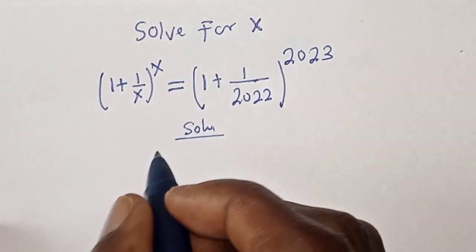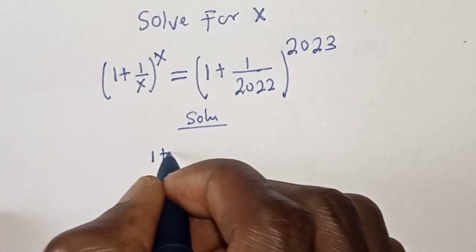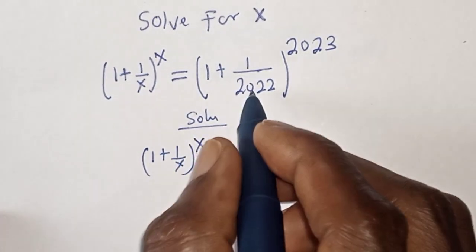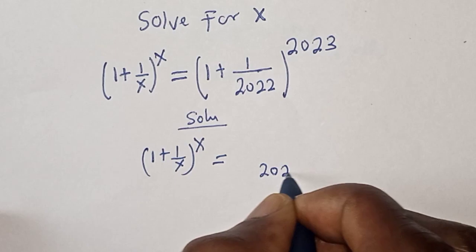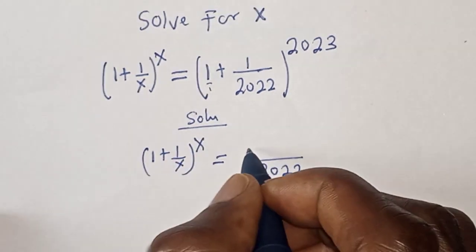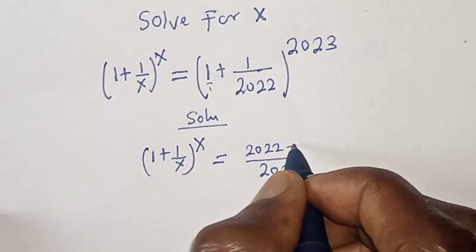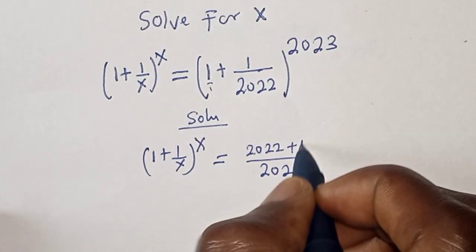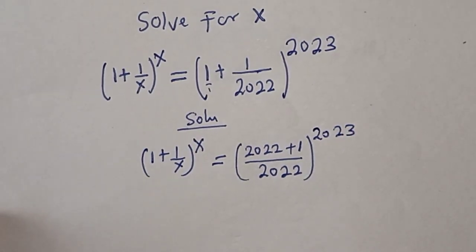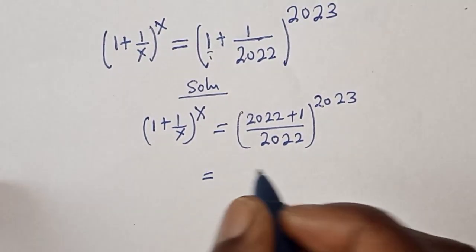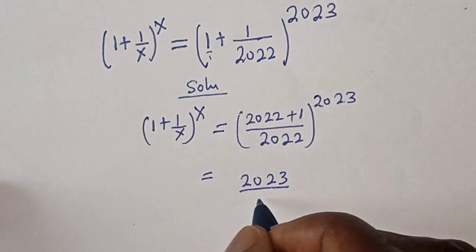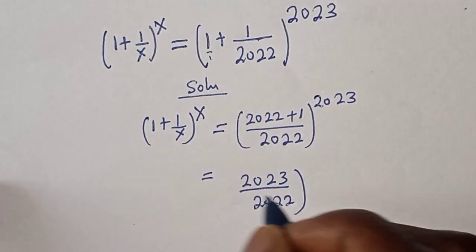We have (1 + 1/s)^s equal to the right-hand side. With a = 2022, we expand: 2022 times 1 gives 2022, plus 2023. In 2021 times 1 that is 1, to the power of 2023. This equals (2022 + 1)/2022, or (2023/2022), to the power of 2023.